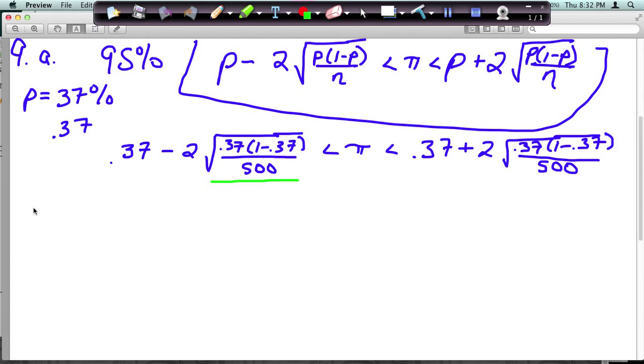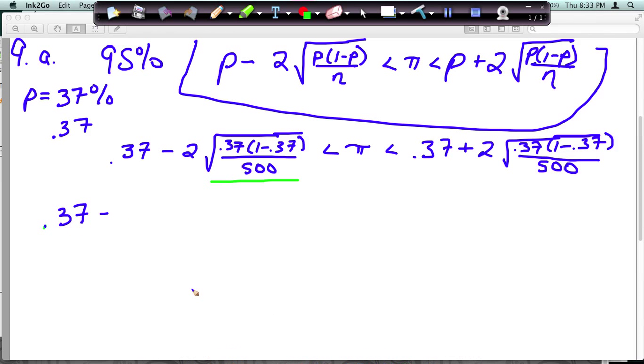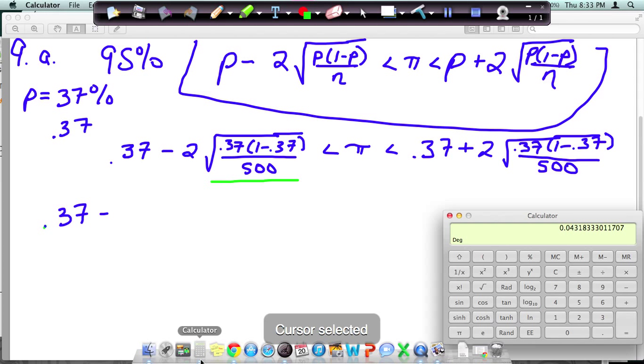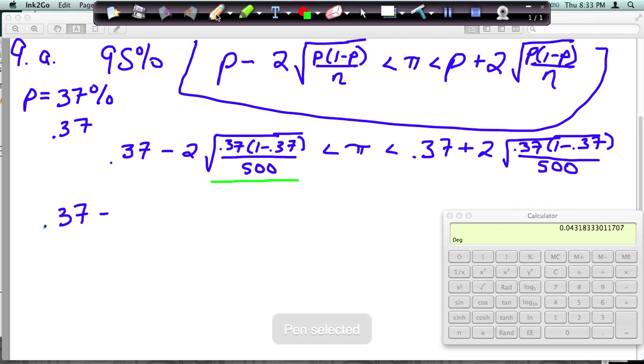So I have 0.37 minus, and I just lost what that was, one sec, 0.04318. And so you don't want to round a whole lot until the very end, just to make sure your answer is accurate. So I'm going to go ahead and write minus 0.04318, and then from my interval, then I'm going to have 0.37. And remember, we already did all this math, so I don't need to do it again. I just need to, instead of subtract it from my 0.37, I need to add it.